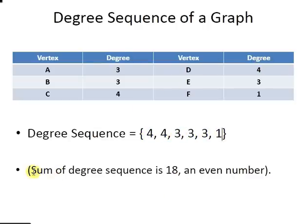Now just as a remark, the sum of the degree sequence is 18, which is an even number. So that's something to check. If you get an odd number, you must have made a mistake.